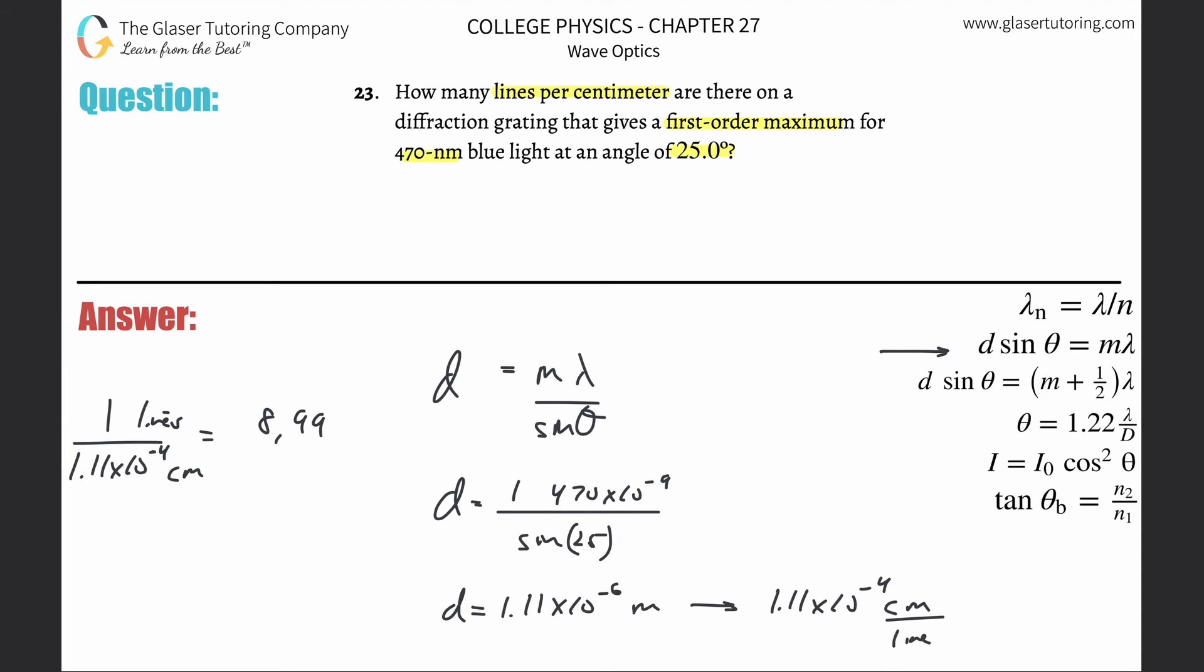We get a value here of about 8992, but if you consider the sig figs, there should be a zero there—so 8990. This is the number of lines per centimeter.